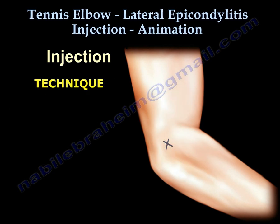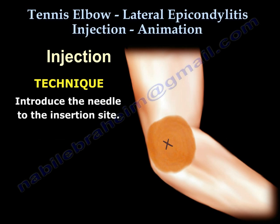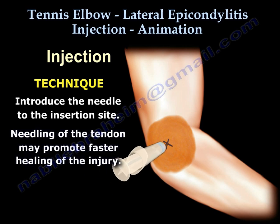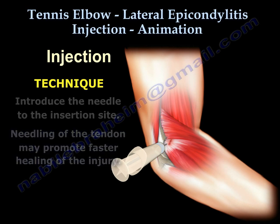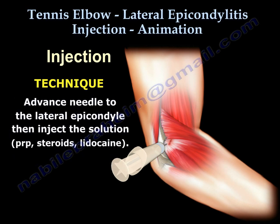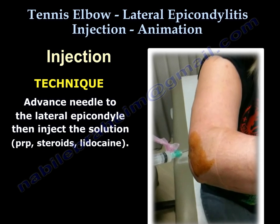Clean the area with betadine. A consent is usually obtained and timeout is done. Introduce the needle to the insertion site. Needling of the tendon may promote faster healing of the injured tendon. Advance the needle to the lateral epicondyle, then inject the solution — either PRP or steroids. Usually lidocaine, which is a local anesthetic, is used also. Here is an example of an injection into the lateral epicondyle.